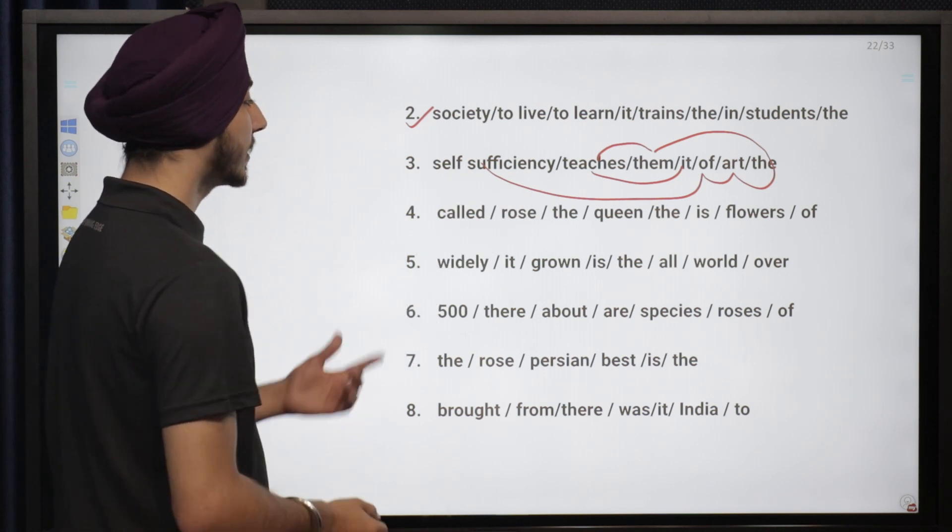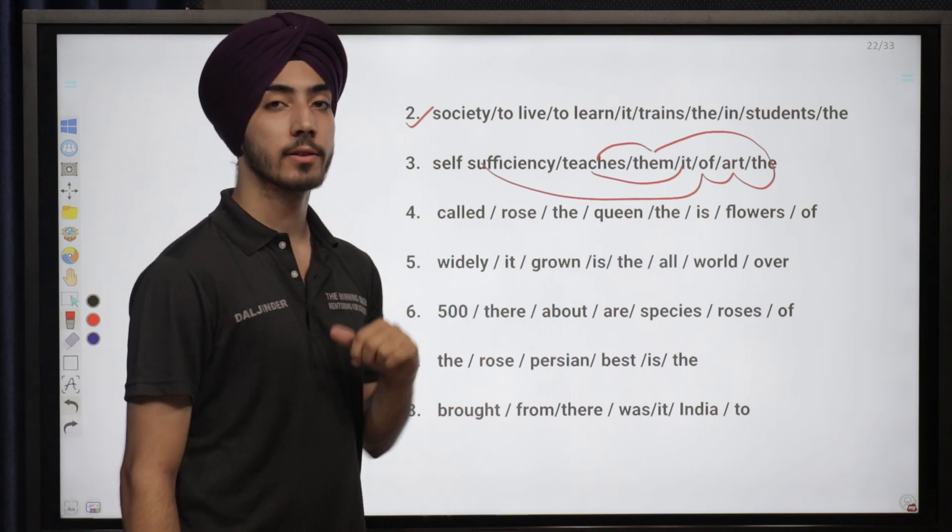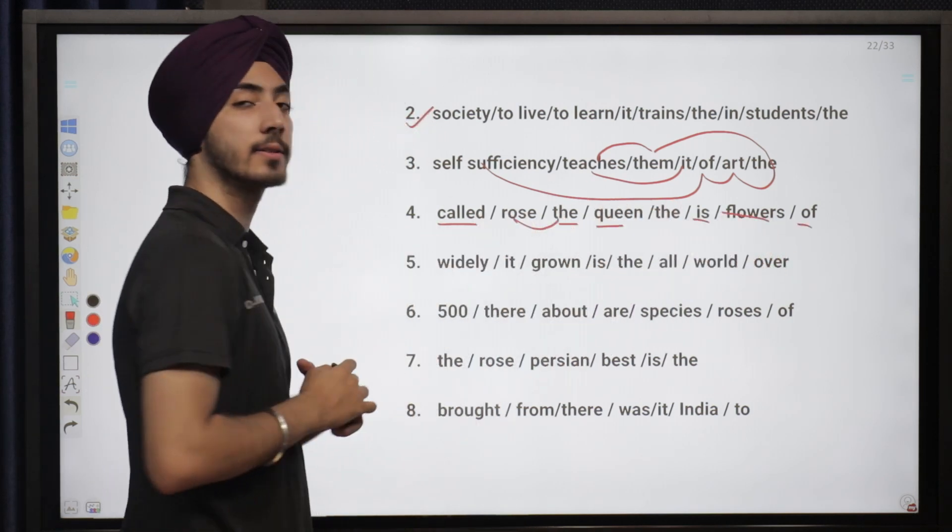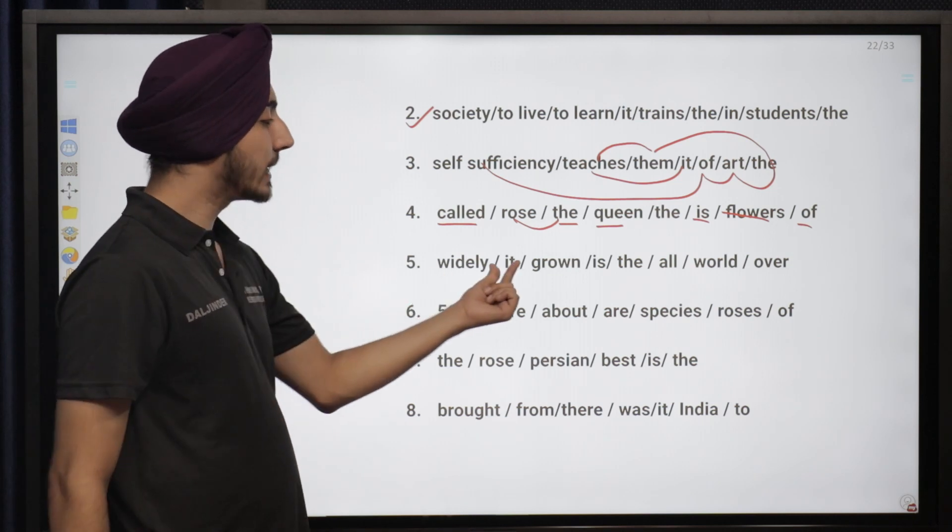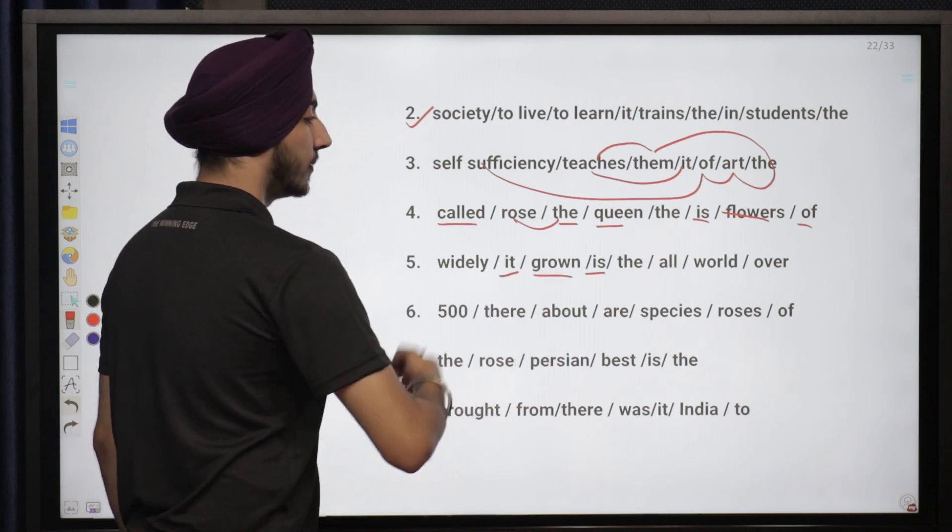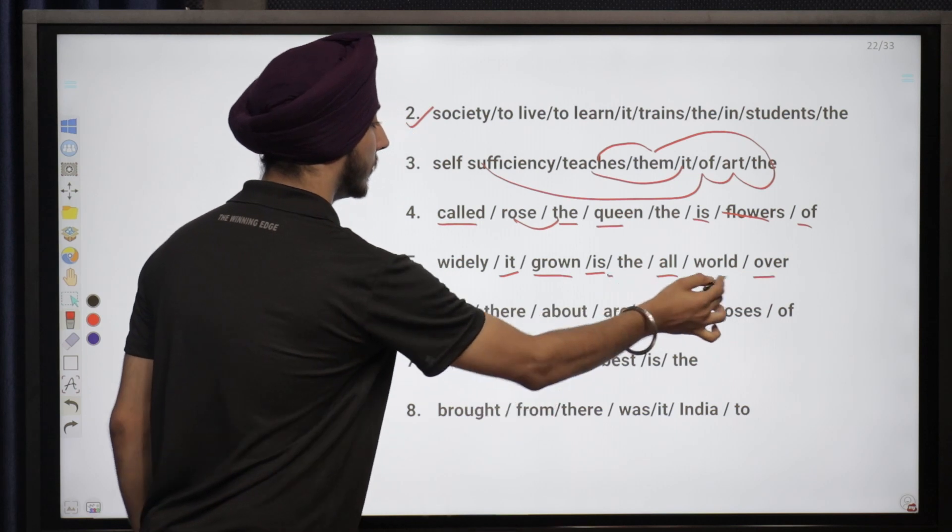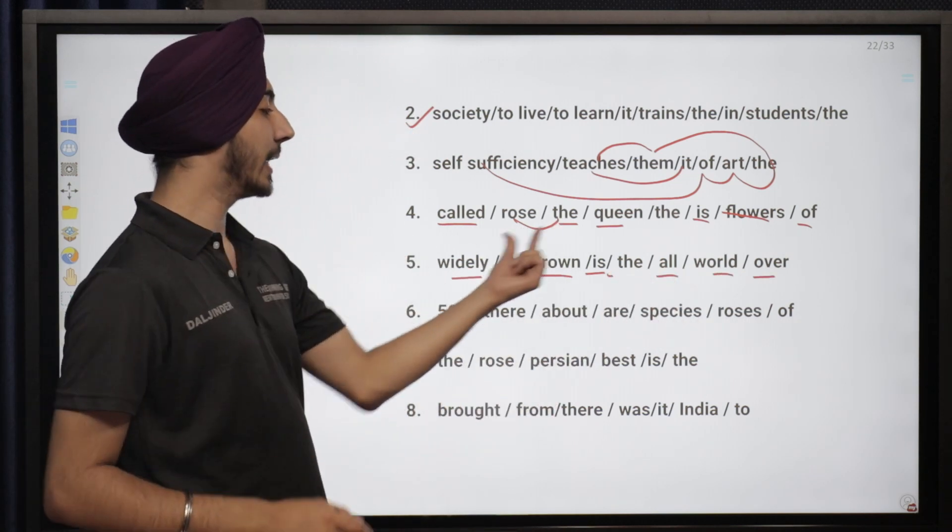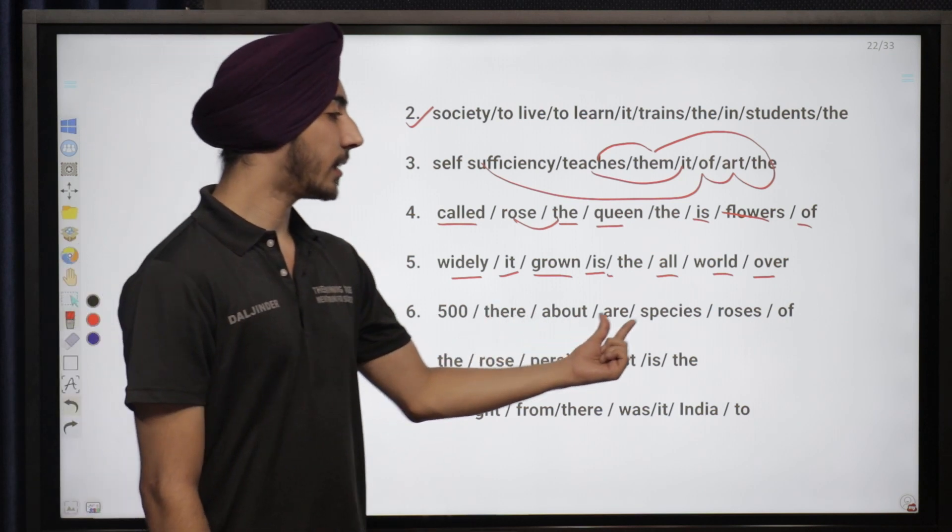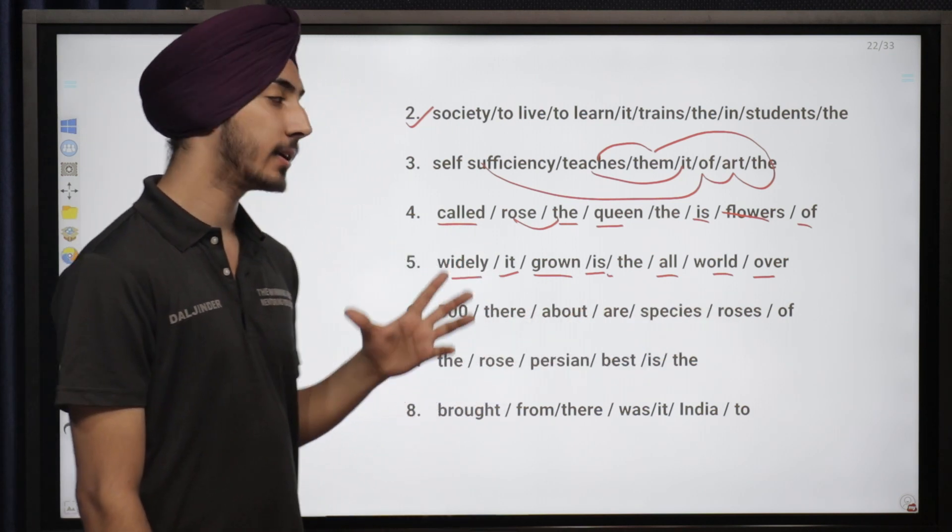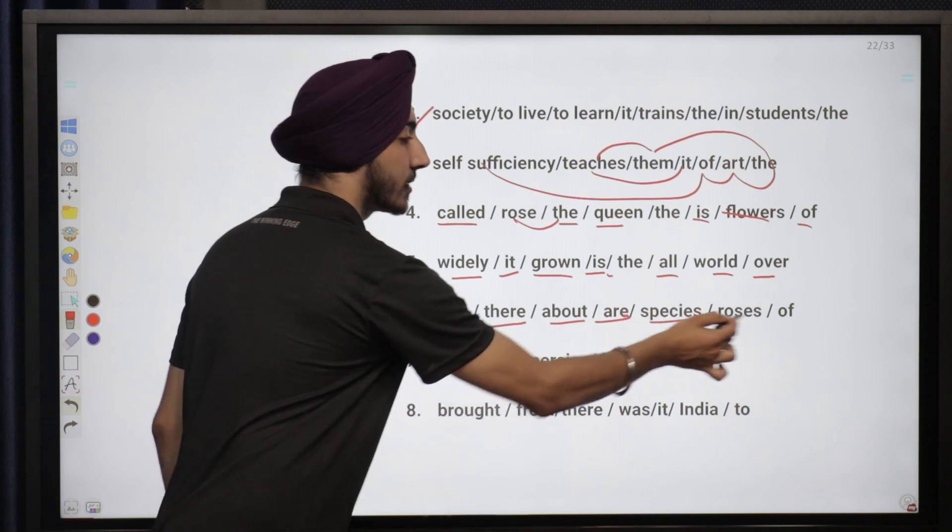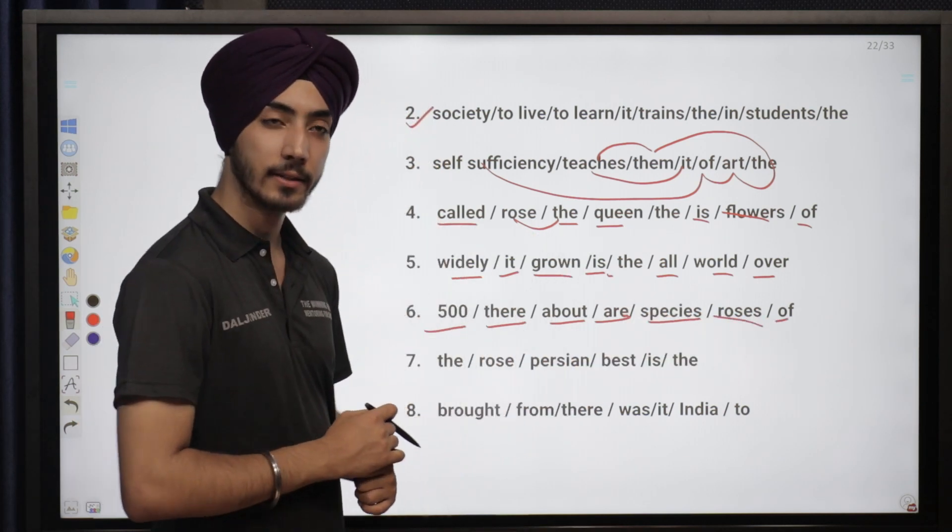Next here: called rose the queen the is flowers of. Very simple. The rose is called the queen of flowers. Widely it grown is the all world over. So it is grown wildly all over the world. 500 there about are species roses of. So we can say there are about 500 species of roses.